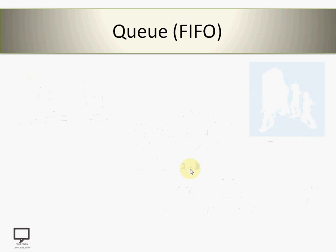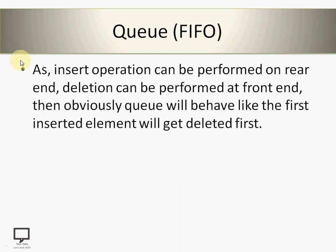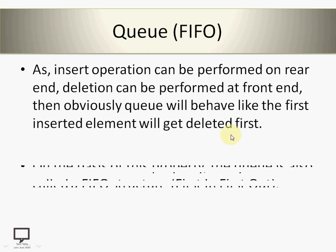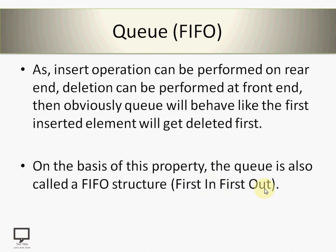Whenever we want to perform any insert or delete operation, insertion is performed at the rear end and deletion is performed at the front end respectively. This means the queue will behave such that the first inserted element gets deleted first. This behavior of a queue is called First In First Out, or FIFO. On this basis, the queue is also called a FIFO structure.